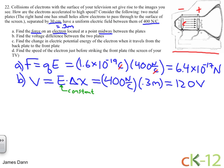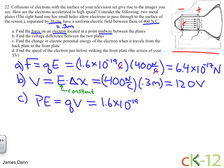In Part C, we want to find the potential energy. The potential energy is equal to the charge times voltage, and we know both of these. The charge is the charge of an electron, and the voltage we just found is 120 volts. Plugging this into the calculator, you should get 1.92 times 10 to the minus 17 joules.